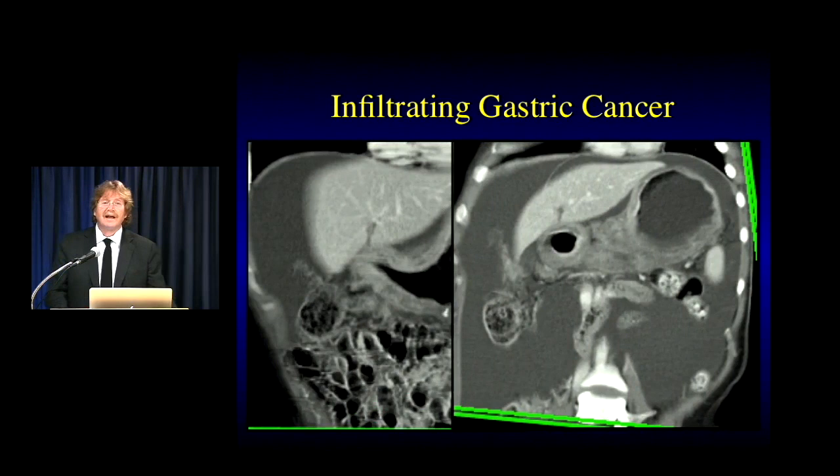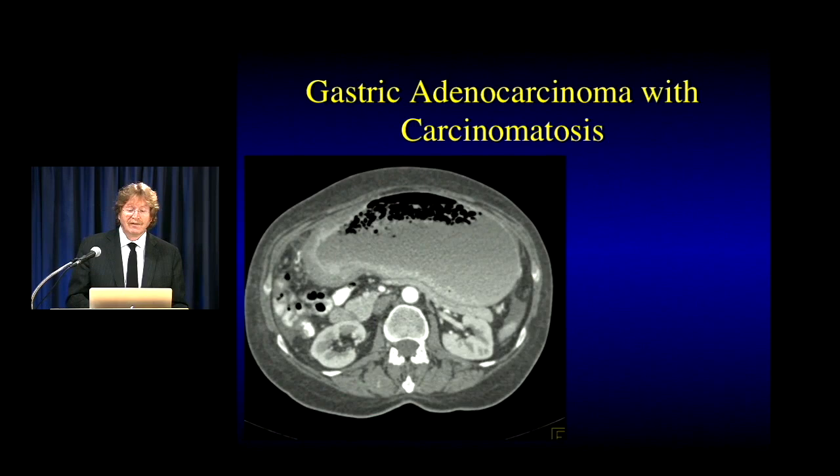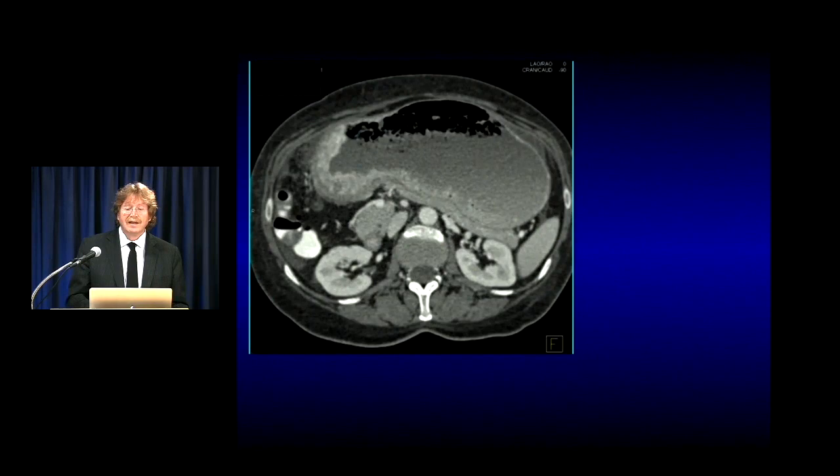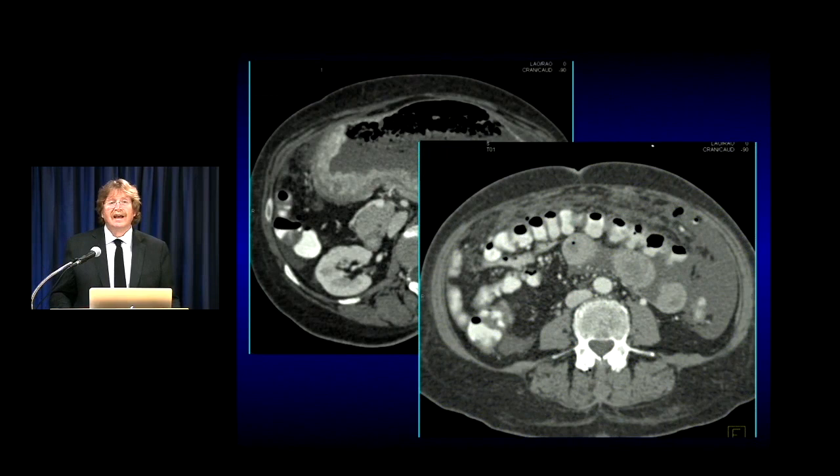We also note infiltration of the stomach — linitis plastica — with ascites indicating carcinomatosis. Ascites and carcinomatosis are common findings. In one case: gastric outlet obstruction, distended stomach, infiltration of the antrum, carcinomatosis, implants on the omentum, implants on the colon — very classic carcinomatosis. Gastric cancer is one of the classic tumors that gives this type of carcinomatosis.